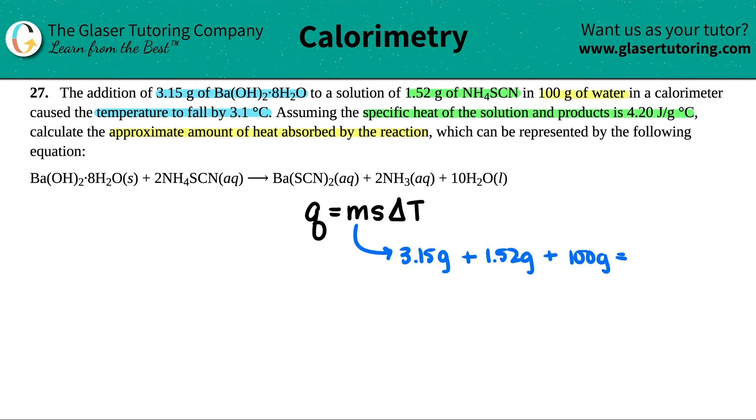So the overall mass would be 3.15 grams plus 1.52 grams plus 100 grams. Let's see what that number is: 3.15 plus 1.52 plus 100. That was pretty simple. My m value would be 104.67 grams.